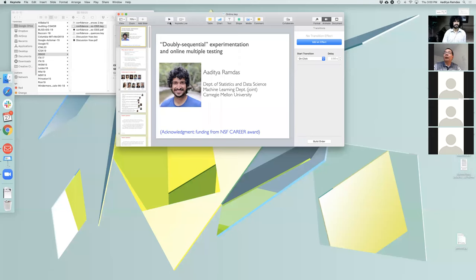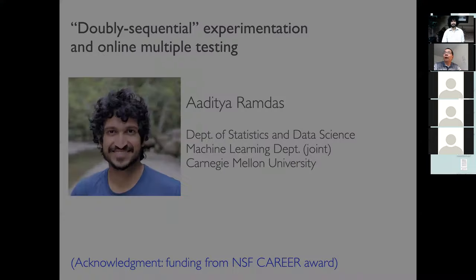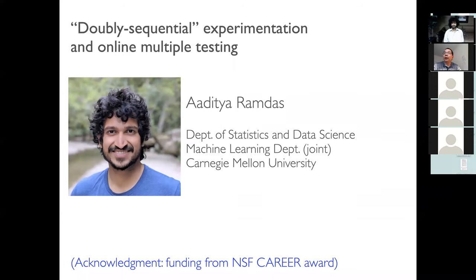Dr. Ramda's areas of applied interest include neuroscience, genetics, and voting. He is one of the organizers of the StatML machine learning group at Carnegie Mellon University.